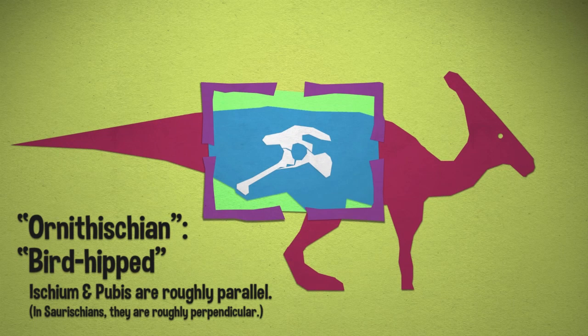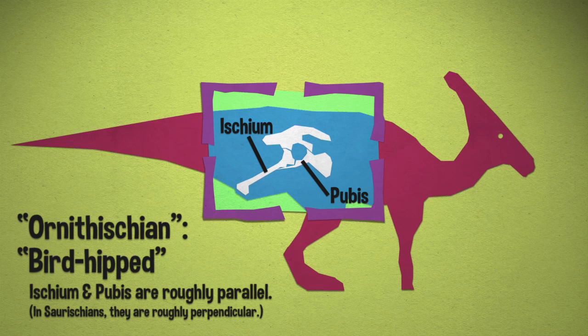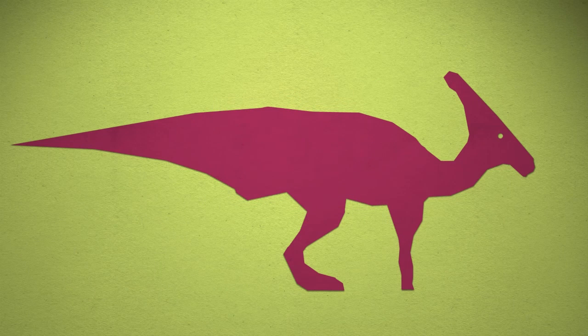The ischium. This is an Ornithischian. So the pubis is forward, but the ischium is backward. And you would see that reflected in the look of the tail underneath.